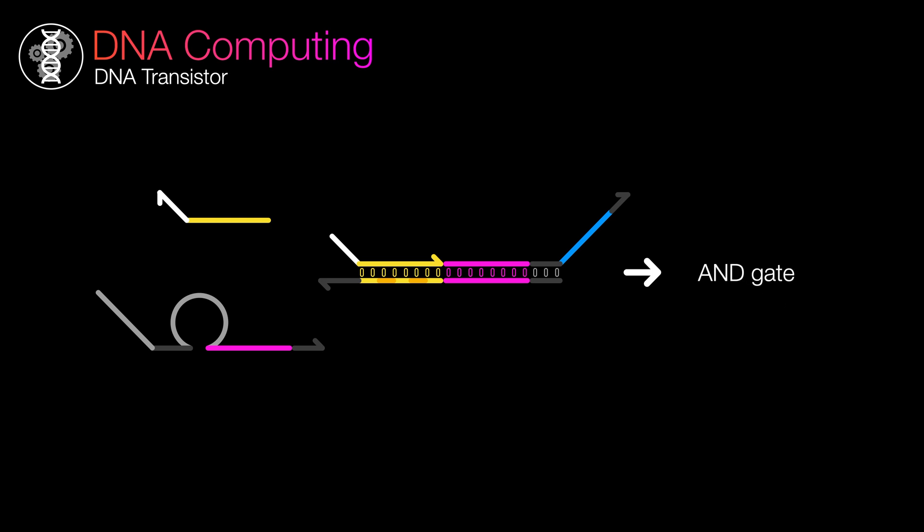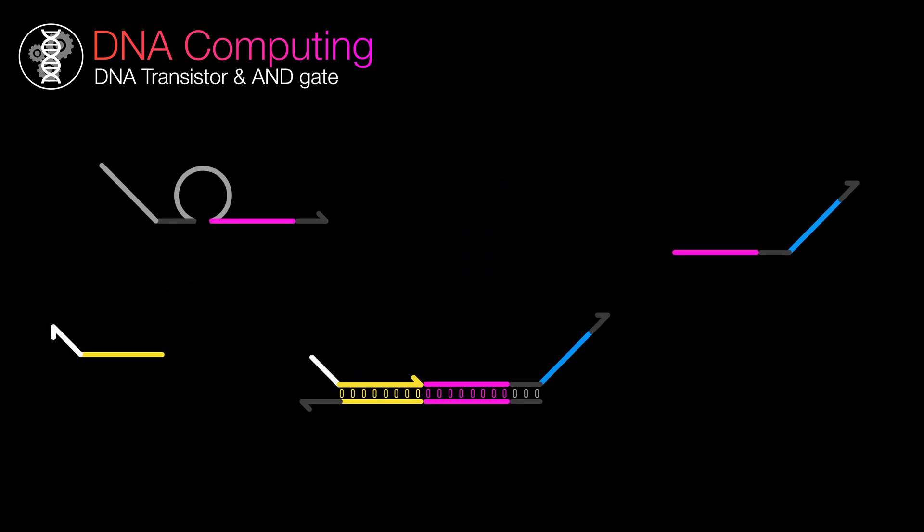You need both to generate an output. This isn't just a transistor, it's also an AND gate. Of course, there are way more gates than an AND gate, so we'll explore more DNA logic gates in the next video.